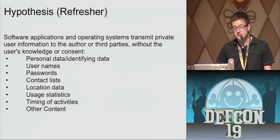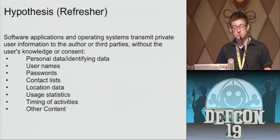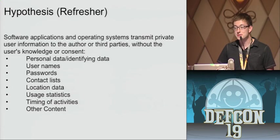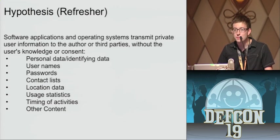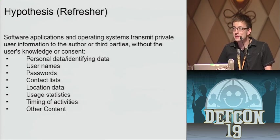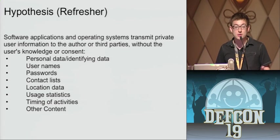So tying back to my hypothesis: software applications and operating systems transmit private user information to the author or third parties without the user's knowledge and consent. Throughout this talk I've stated personal data, identifying data — sent. Whether it's encrypted or not, it can be SSL stripped. I promised you a little bit about some of the applications I tested. I did test Red Phone. I know Moxie believes in privacy, but does he walk the walk? I actually couldn't intercept his traffic. Fascinating. Apparently Moxie, having broken SSL, knows how to secure his stuff. And he does.